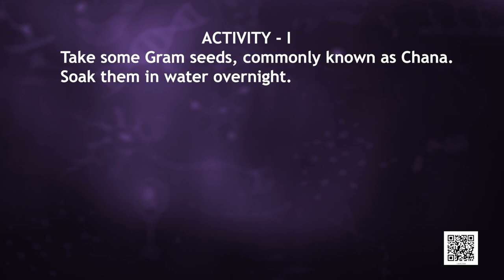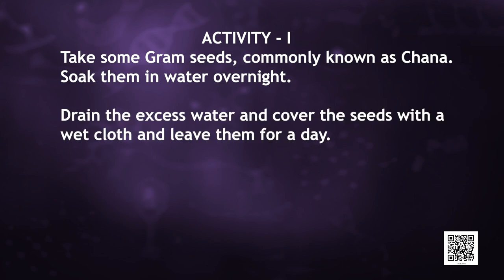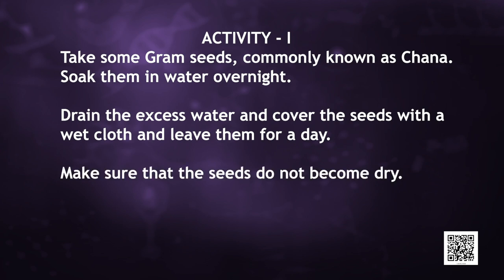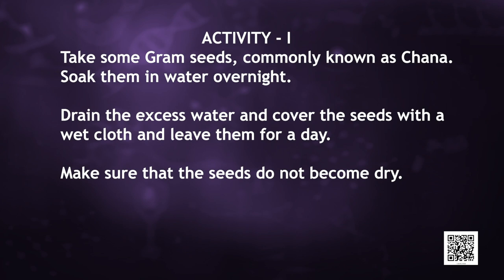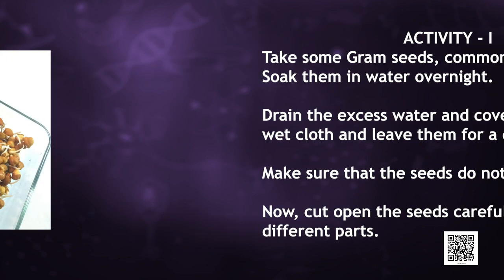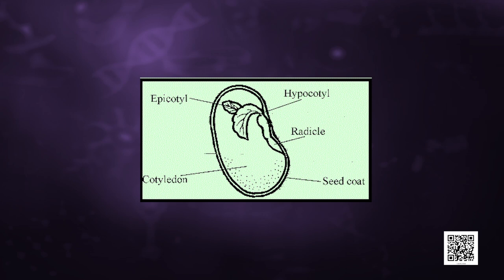Now, can you do an activity at home? Take some gram seeds, commonly known as chana. Soak them in water overnight. Drain the excess water and cover the seeds with a wet cloth and leave them for a day — make sure that the seeds do not become dry. Now cut open the seeds carefully and observe the different parts. Compare your observation with the figure and see if you can identify all the parts. You will see the cotyledon, which stores food, the plumule, which is the future shoot, and the radicle, which is the future root.